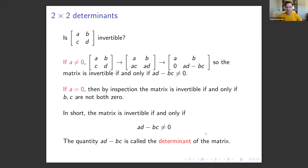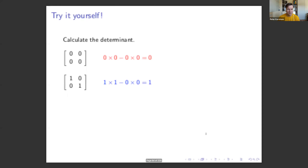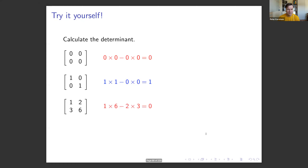This brings us to the notion of the determinant. By definition, the determinant of a 2x2 matrix is ad minus bc. Computing some examples: the determinant is clearly zero in the first case, equals one in the second, zero in the third, and negative one in the fourth. In two of those examples the determinant was equal to zero.